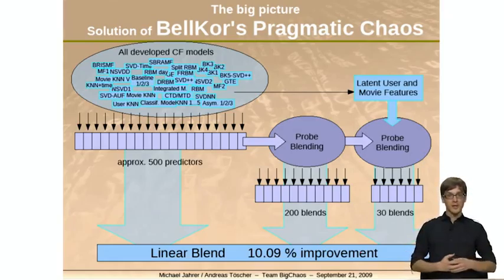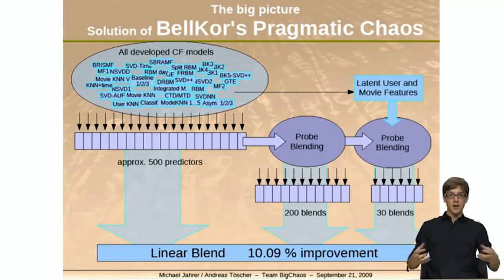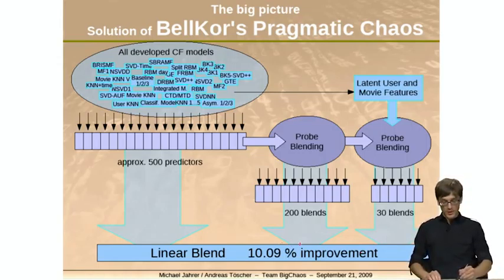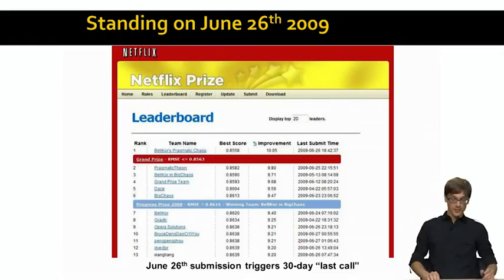And using this, they were actually able to achieve this magical 10% improvement. So if you look at the Netflix leaderboard in 2009, the winning team that was from AT&T Research, or Bell Labs, actually achieved that error.